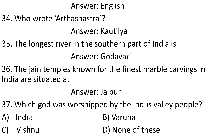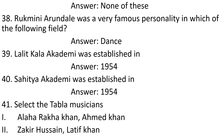Question 35: The longest river in the southern part of India is. Answer: Godavari. Question 36: The Jain temples known for the finest marble carvings in India are situated at. Answer: Jaipur. Question 37: Which god was worshipped by the Indus Valley people? Options: A) Indra, B) Varuna, C) Vishnu, D) None of these. Answer: None of these.